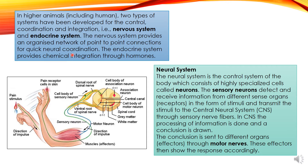In this video, we are going to discuss the neural system. The neural system is the control system of the body, consisting of highly specialized cells called neurons. Neurons are the structural and functional unit of the nervous system. The sensory neurons detect and receive information from different sense organs. In our body, there are different types of receptors responsible for collecting impulses from stimuli in our surroundings. For example, our eye has the photoreceptor, which helps in sensing the light around us — dark light, dim light, bright light.